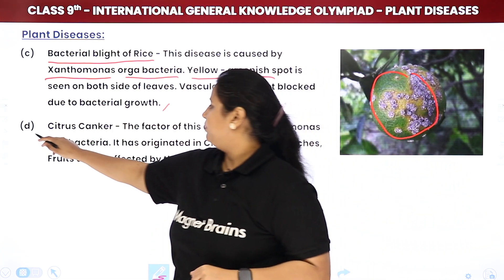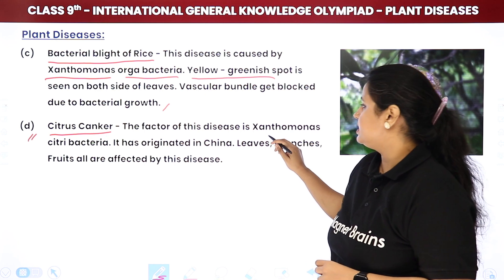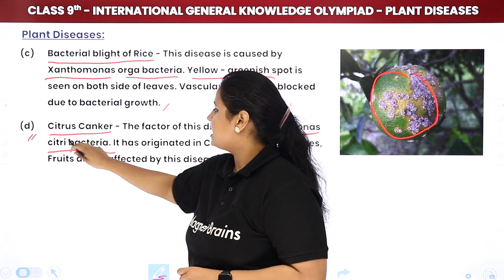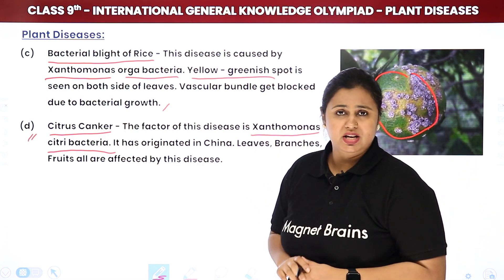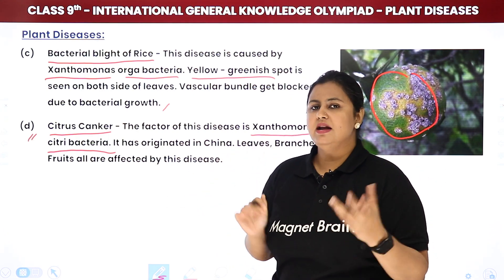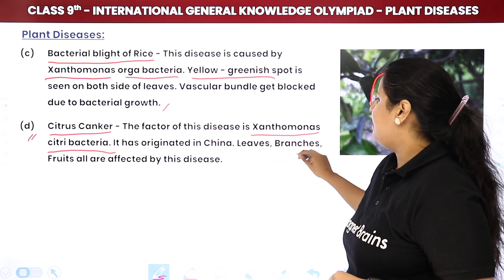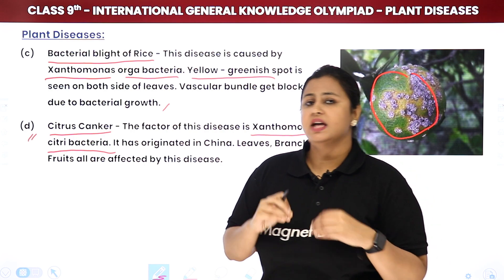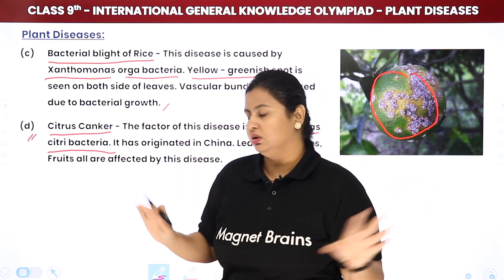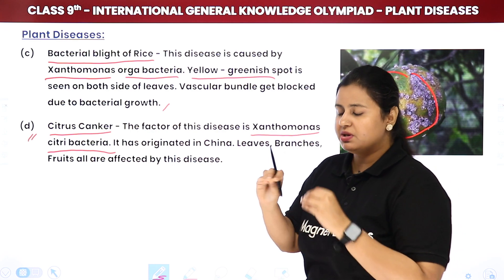The fourth bacterial disease is Citrus Canker, caused by Xanthomonas citri bacteria, which originated in China. In this disease, leaves, branches, and fruits are all affected — essentially the whole flowering plant is impacted, making it a very fatal disease in which each part of the plant is affected.